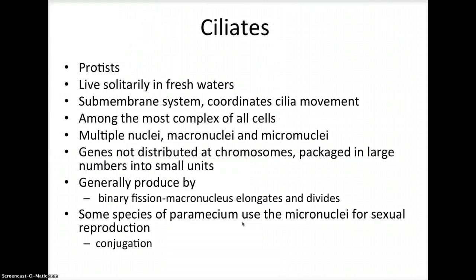Ciliates are a group of protists that use cilia to move and feed. Many of these ciliates live as solitary cells in fresh water. They have a very intricate sub-membrane system that uses microtubules to coordinate the movement of thousands of cilia at once. Some ciliates are completely covered, while others have a specific arrangement of cilia for their diverse lifestyles — some needing cilia to help them scurry about on leg-like structures, while others use them to create a locomotor membrane-like action.